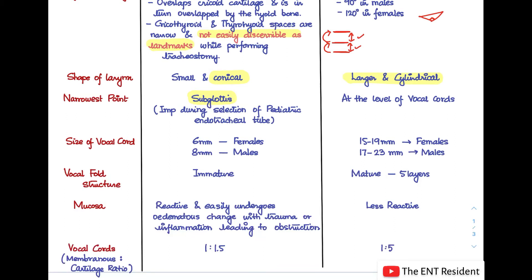The vocal fold structure is very immature in children, whereas in adults it is mature with five distinct layers. The mucosal lining in infants is very reactive and easily undergoes edematous change with trauma or inflammation, leading to more obstruction. In adults the mucosa is less reactive and less prone to spasms.